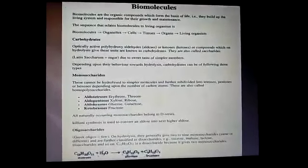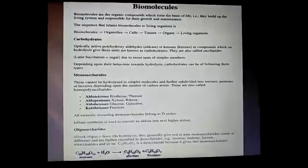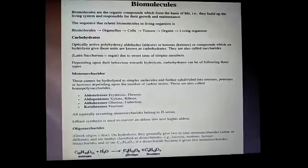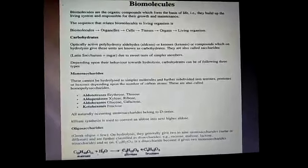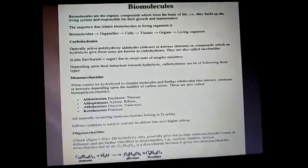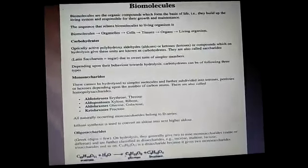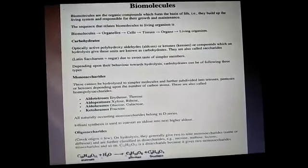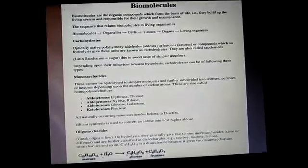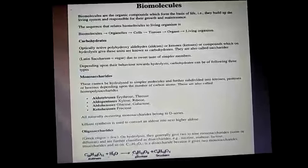The monosaccharides, as already explained, are the simplest carbohydrates which cannot be hydrolyzed to a smaller molecule. They contain 3 to 7 carbon atoms. There are about 20 monosaccharides which occur in nature. These are of 2 types: aldose and ketose.